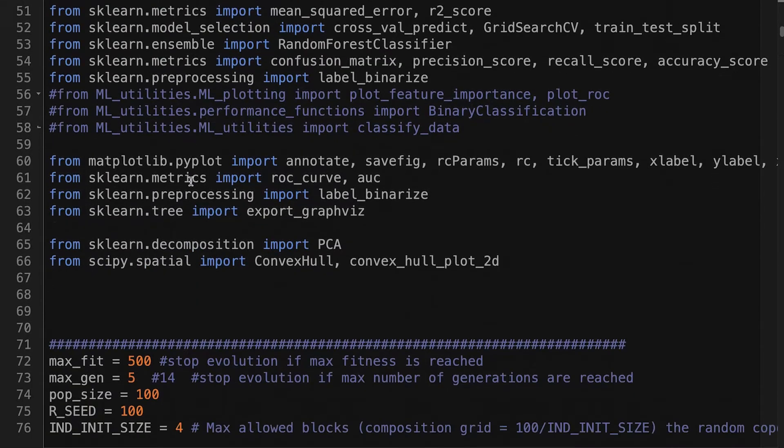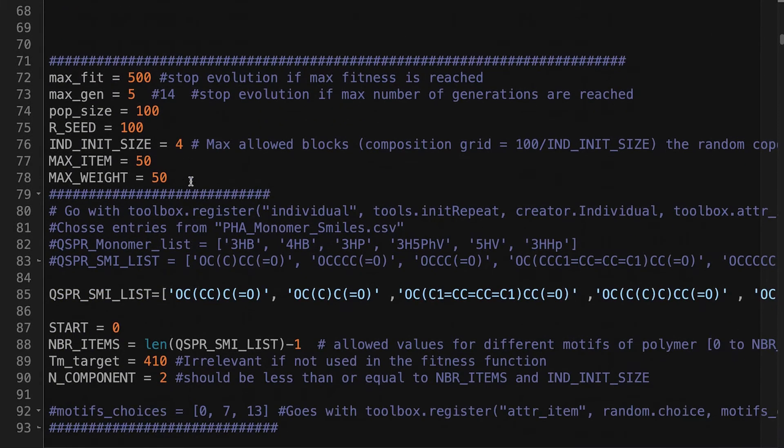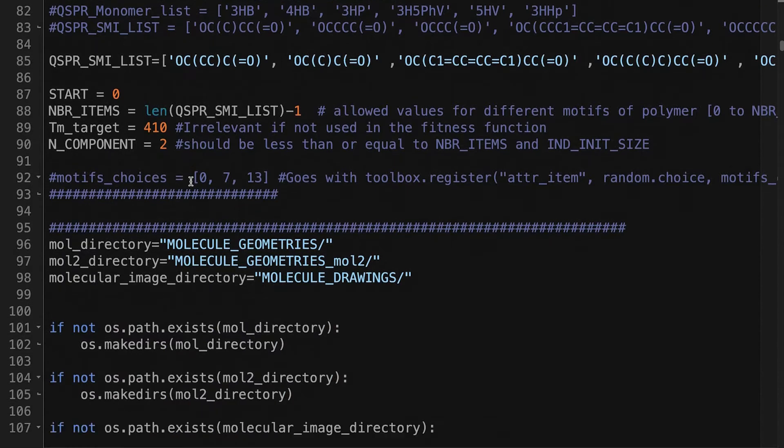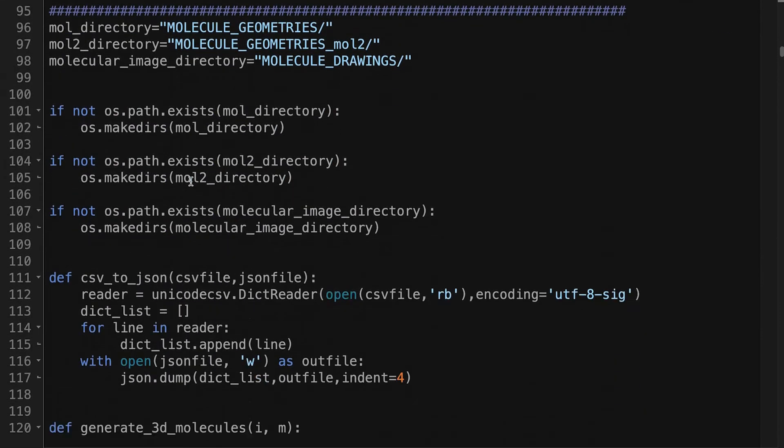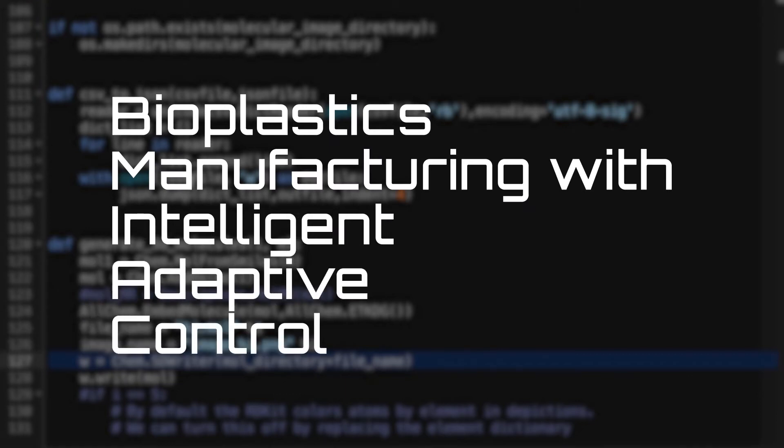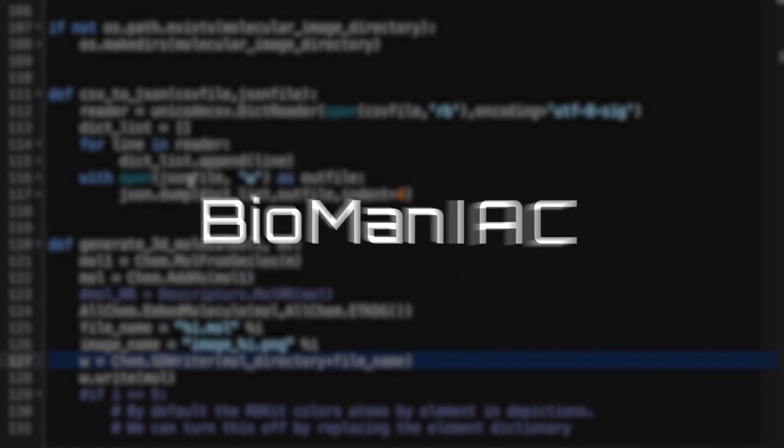At Los Alamos National Laboratory, we created an innovative machine-learning-based approach to accelerate the polymer development process. Bioplastics Manufacturing with Intelligent Adaptive Control, or Biomaniac.